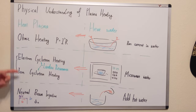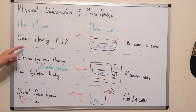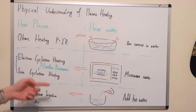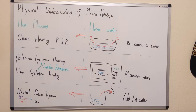There are three main ways to do that: Ohmic heating, electron cyclotron heating (ECH), ion cyclotron heating (ICH), or neutral beam heating.